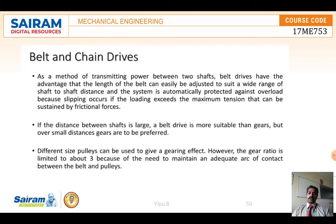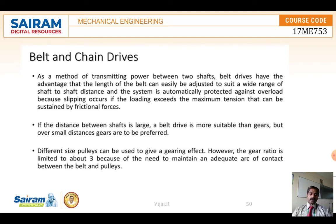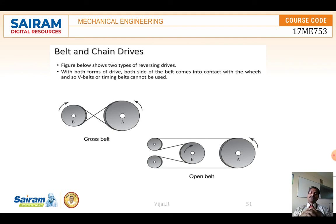Belt drives are more suitable than gears when the distance between shafts is large. For shorter distances, gears are best. Different size pulleys can be used to increase or reduce speed, similar to how gears work. There are two belt configurations: open belt, where the belt contacts one side of each cylinder, and cross belt, where both sides make contact.